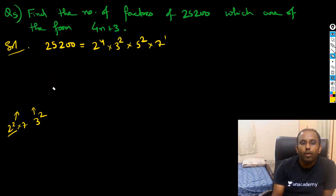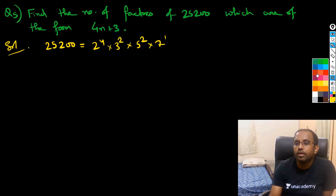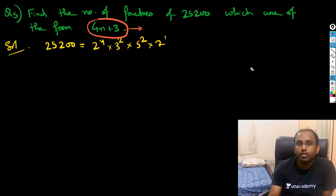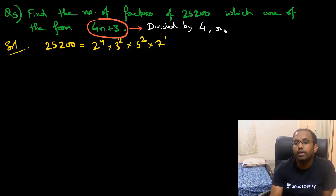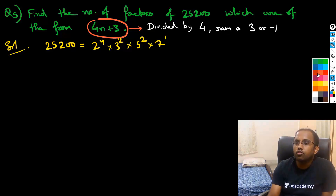While solving such questions, I need to keep this in mind: I have to bring the form 4n plus 3. Form of 4n plus 3 actually means that when divided by 4, the remainder is 3 — or equivalently, minus 1. So just focus on the minus 1 here.